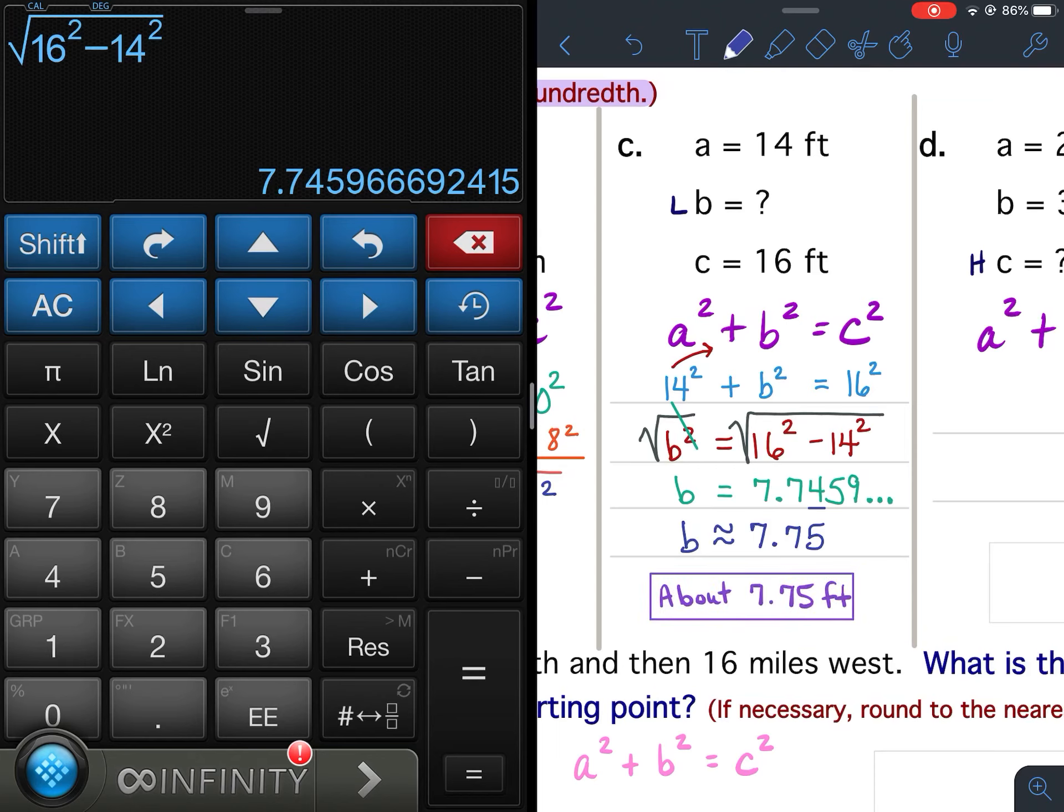Because we rounded, it's about 7.75 feet. We need to use the word about because we are rounding. If you have any questions on C, please let me know. Pause your video. Make sure you have everything written down. Please don't skip anything.